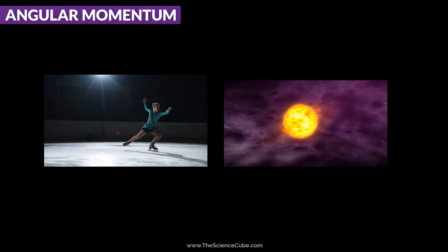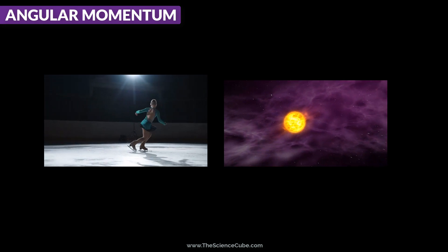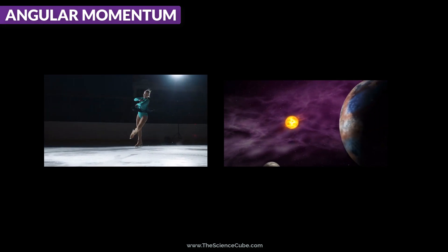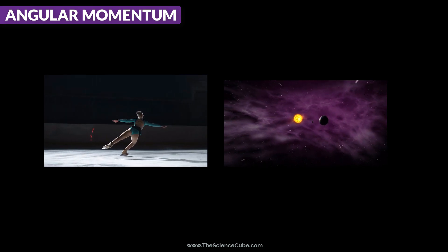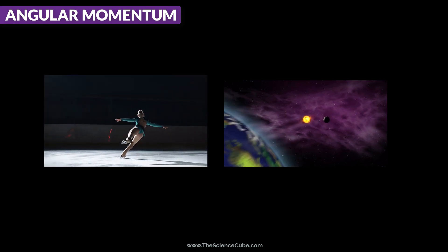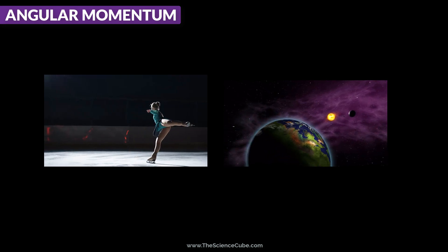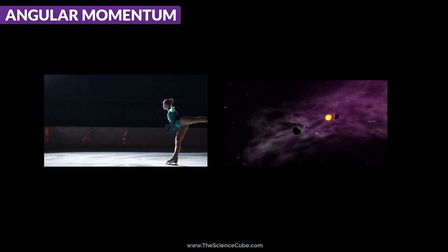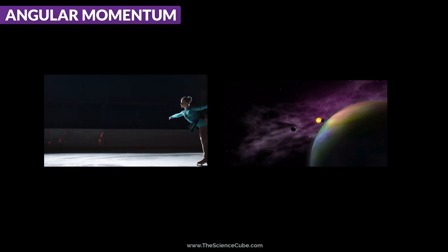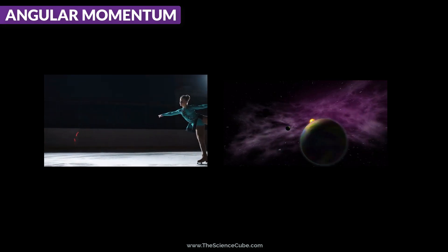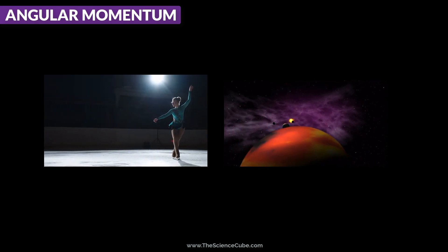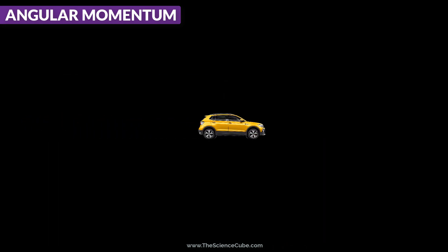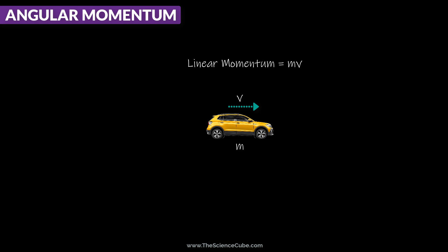Angular momentum is a concept that explains a lot of things, from why figure skaters spin faster when they pull their arms in to how planets maintain their orbits. This topic is quite simple to understand because it can be very easily compared with its counterpart in linear motion, that is linear momentum.